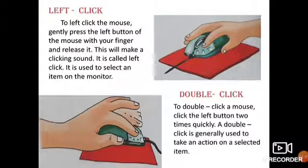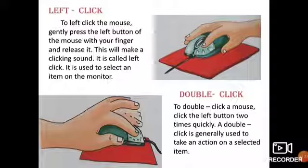Double click means you click the left button two times quickly, one after the other. When you do this, an action is performed on the selected item.